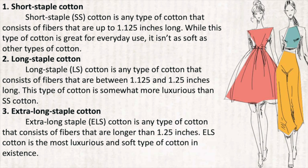There are several types of cotton fabric defined by fiber length. Short staple (SS) cotton consists of fibers up to 1.125 inches long; while great for everyday use, it isn't as soft as other cottons. Long staple (LS) cotton consists of fibers between 1.125 to 1.25 inches long and is somewhat more luxurious than SS cotton.